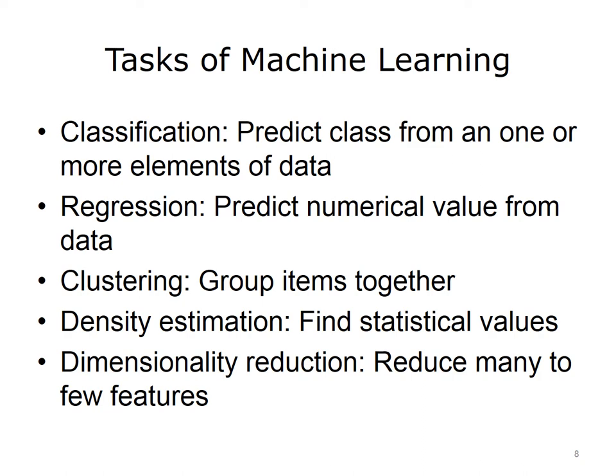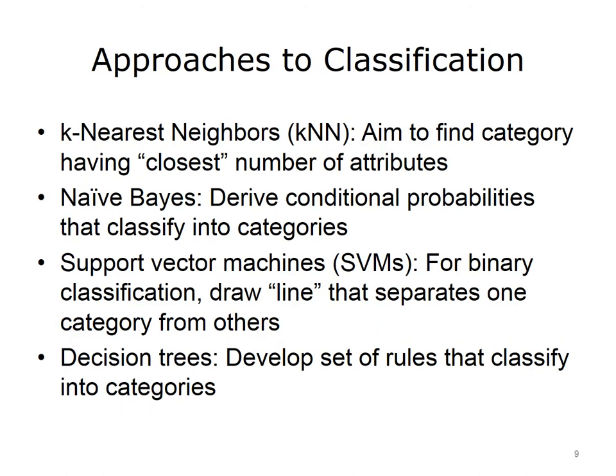There are a number of approaches used in machine learning for classification. Some of the most common algorithms are listed here and described in a general sense. There is a great deal of mathematics that underlies all of them, but we can understand them by looking at what they attempt to do overall. One common approach is K-nearest Neighbors, or KNN, where we aim to find categories by determining the closest number of attributes as calculated via a distance measure, then classify the data into categories by how closely they fit within each category.